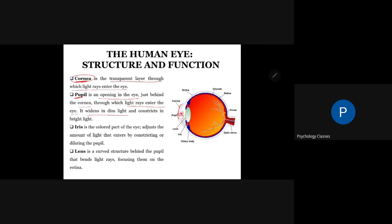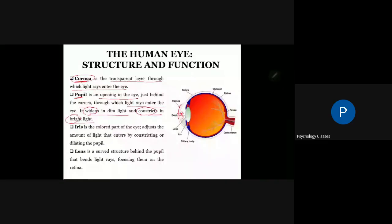The pupil can dilate and constrict. The reason being, if you get more light in our eyes, then the pupil is constricted. If there is too much light coming into our eyes, what will the pupil do? It will become very small so that less light enters.